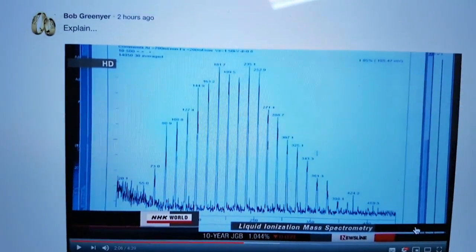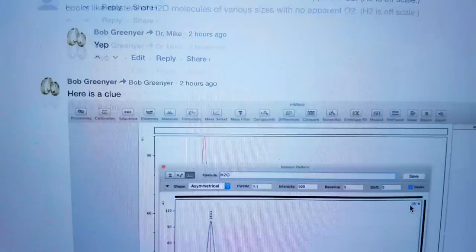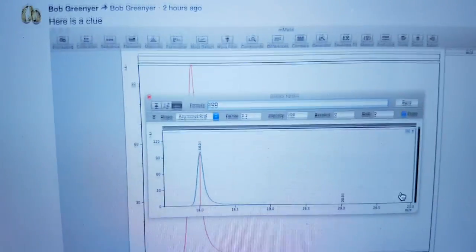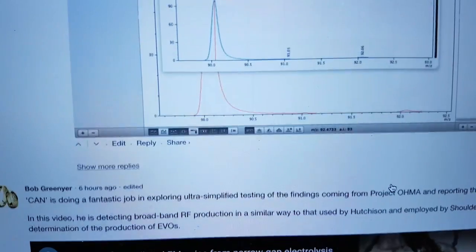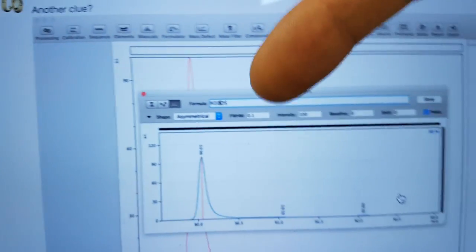When you look at this I did a basic analysis in M Mass. If you just put multiple H2Os in there like H100O5, you end up with being very close to, all bar a little bit of calibration error, the same as these lines here.